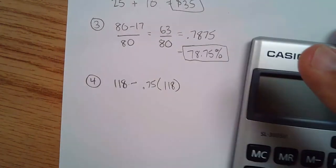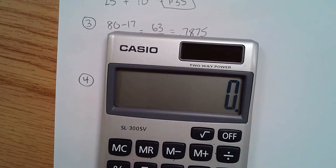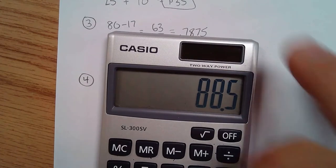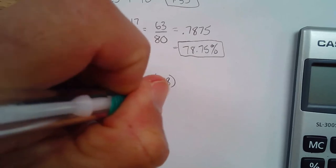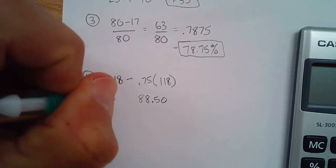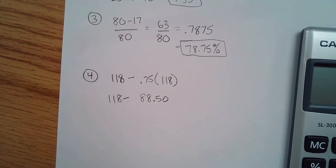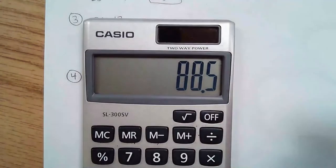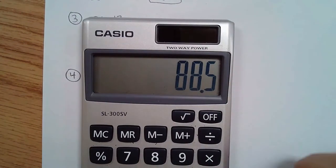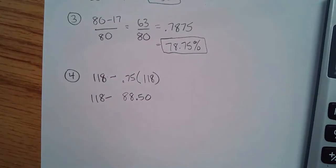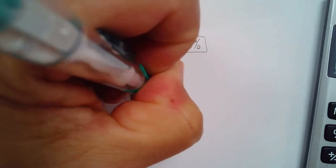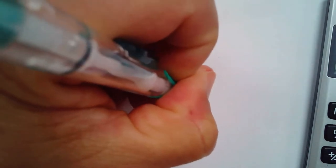0.75 times 118 is $88.50. So that's $118 minus $88.50. Using my quick subtraction method, the answer is $29.50. Wow — that's a deal!